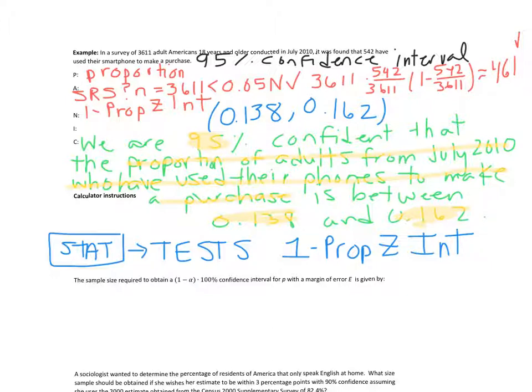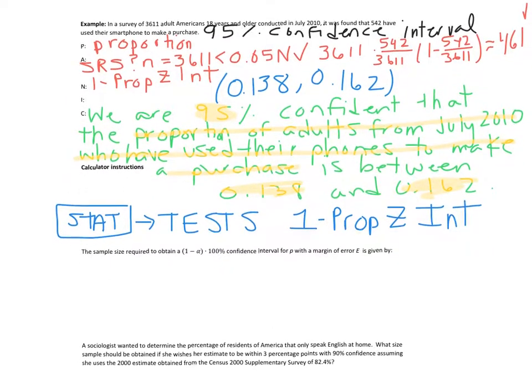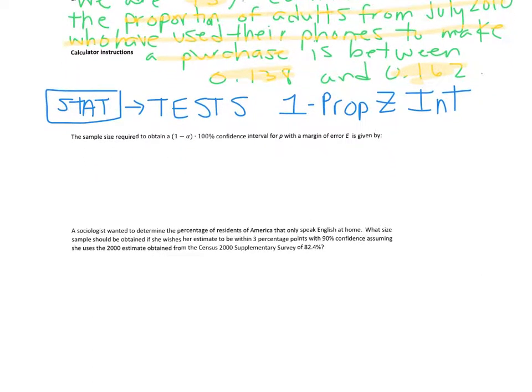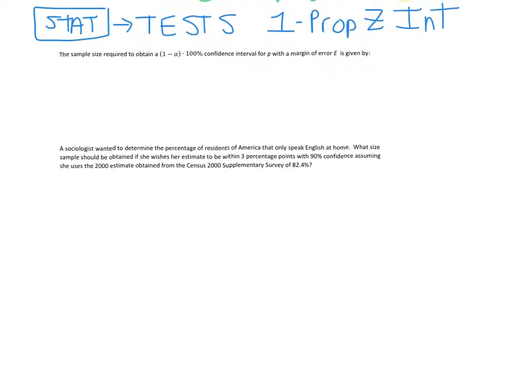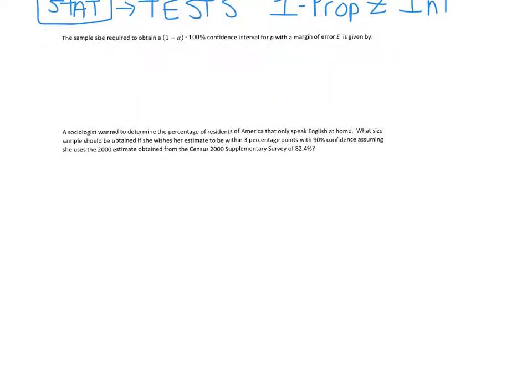Alright, and then the final thing we're going to do is sometimes, before a study, we go in and we want to have a certain confidence level and a certain margin of error. And we can do that if we have a large enough sample size. So here's our next formula. The sample size required to obtain a certain confidence interval for p with margin of error e is given by the following. And we're essentially just taking a formula for the margin of error and solving for n. And then this is what we get.